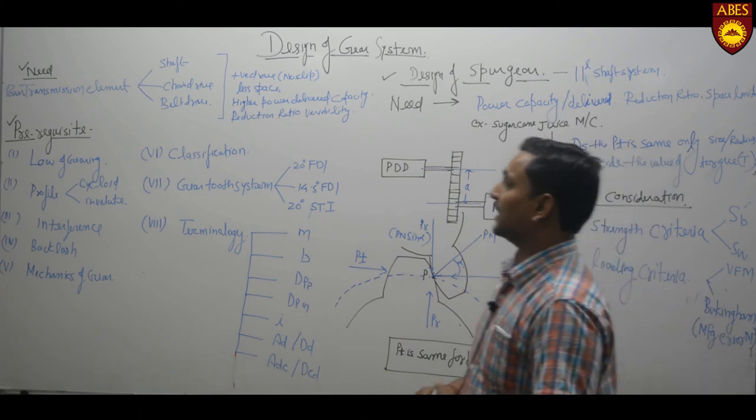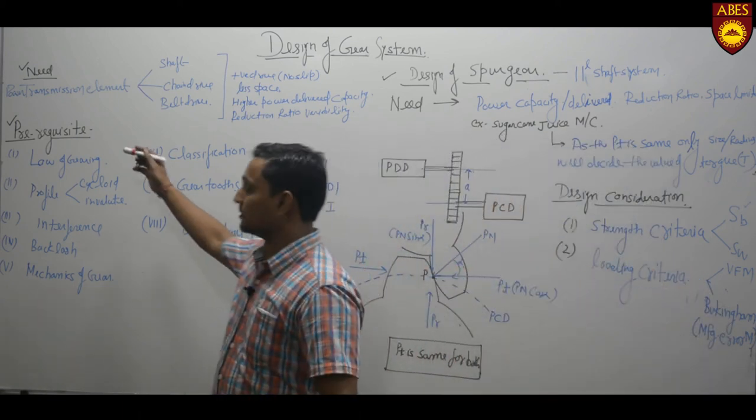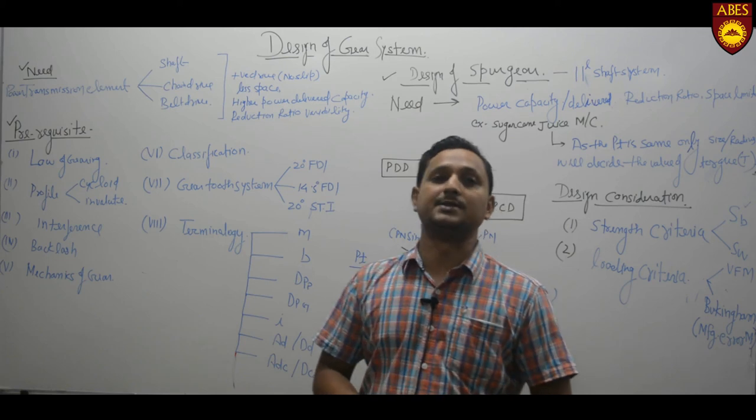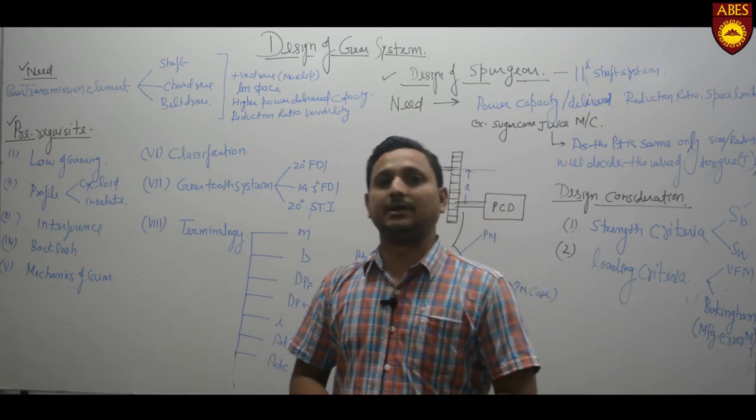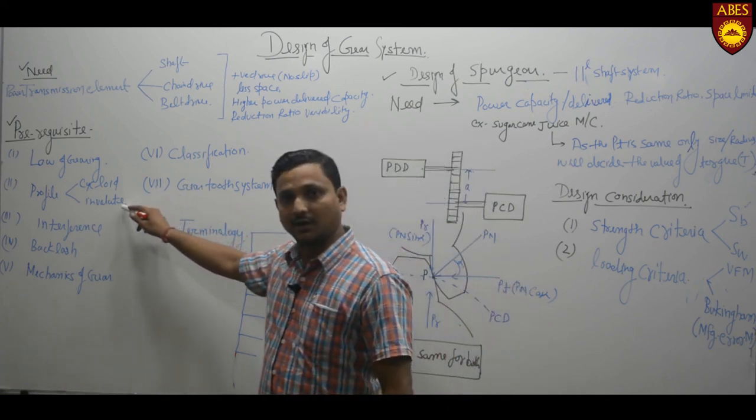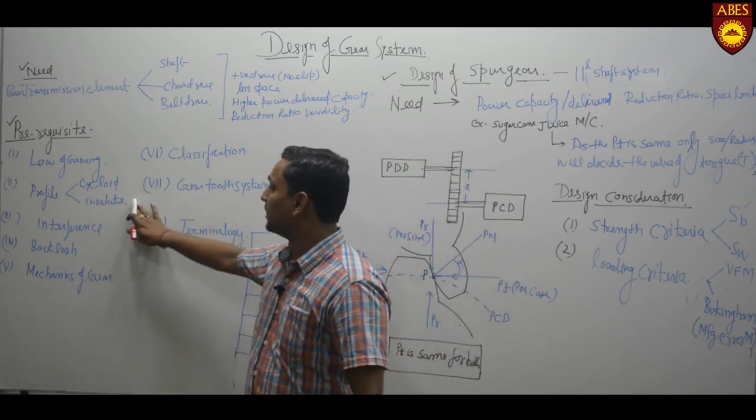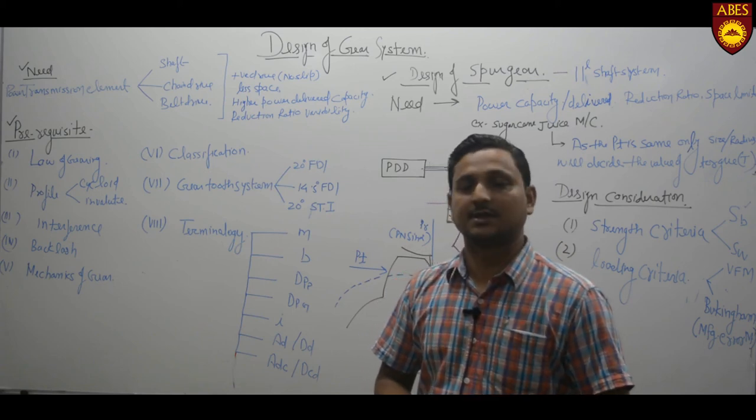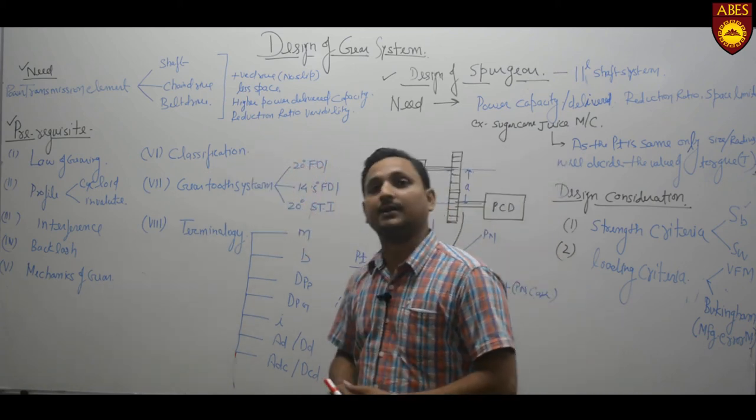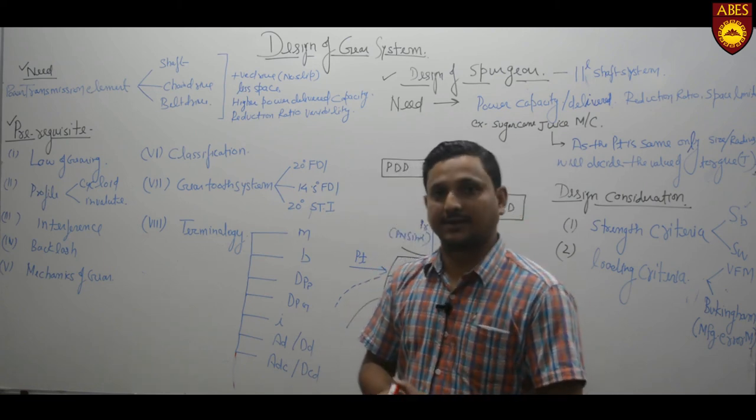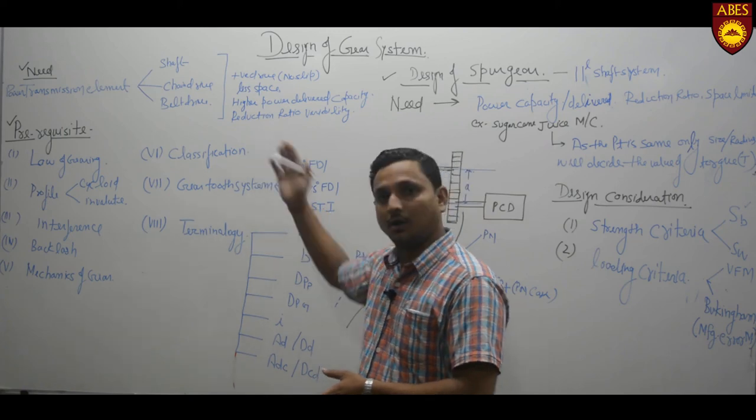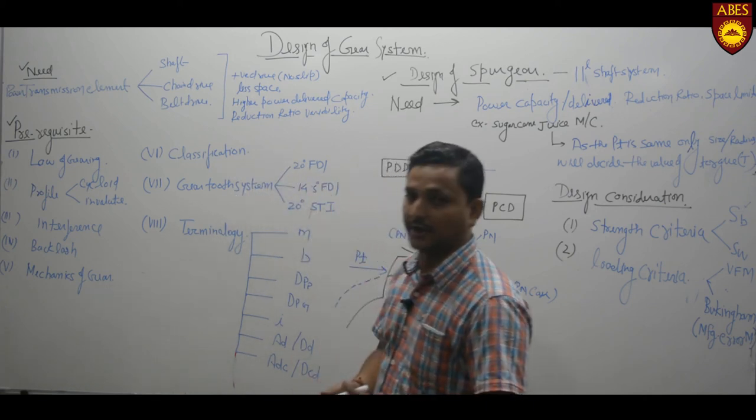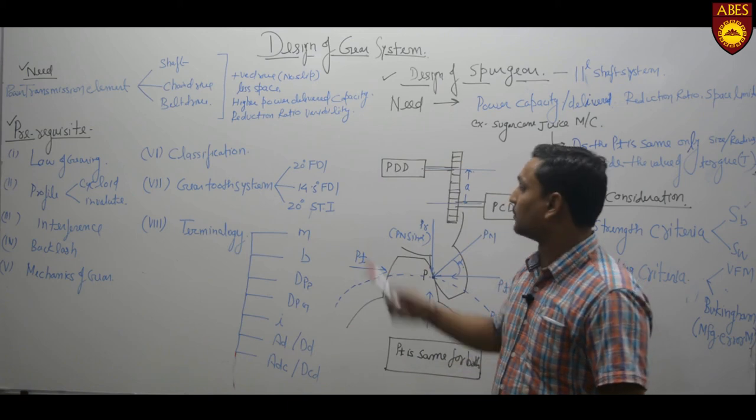To know the gear system design, we need some prerequisite to understand this system or you can say this chapter. The law of gearing, profile of gear system which is involute and cycloid. We know that cycloid system is obsolete right now. Only involute system is using right now in the industry or in the universe. Third one is interference, backlash, mechanism involved in the gear like velocity of approach, velocity of recess. Classification of gear system like on the basis of orientation of shaft like parallel, intersecting non-parallel, non-intersecting on the basis of teeth circuit internally or externally. On the basis of gear system like 20 degree full depth involute, 14.5 degree full depth involute and 20 degree stub tooth involute.